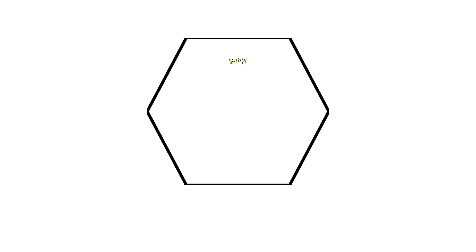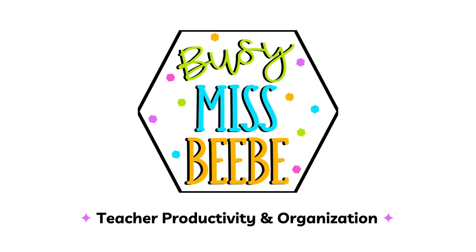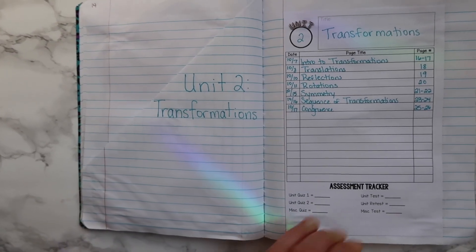Are you ready for this? We are on unit two in the interactive notebook flip through. This unit is transformations. It's actually a really short unit — it takes nine days, so it's like two school weeks, which is awesome. I love that we're able to get through this one quickly. So let's just jump right in.